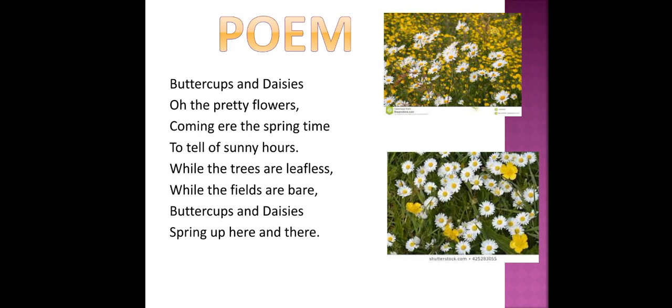Fields are bare means that at that time nothing is in the field, but when the buttercups and daisies are coming, they bring spring along. So when the buttercups and daisies are coming, the trees are coming, the fields are coming — they spring up here and there.